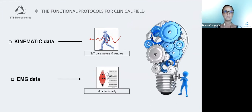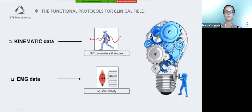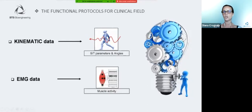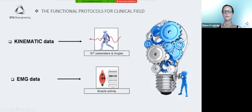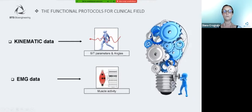But even more important is the objective physical exam of the motor behaviour, which includes a global functional assessment of the patient's movement. Here we can see two possible different approaches to evaluate the movement. We can study the kinematics of the movement — that means the evaluation of the spatial and temporal parameters and the variation of the joint angles — and we can also evaluate the EMG data related to muscle activity, allowing us to understand how the muscles are working during any motor task.